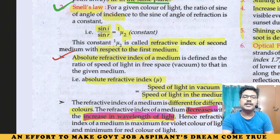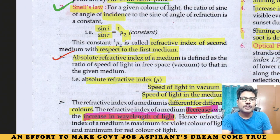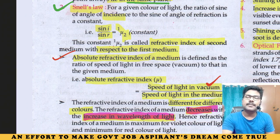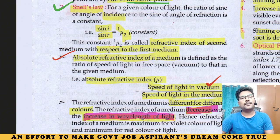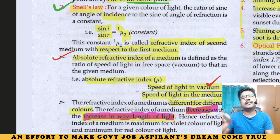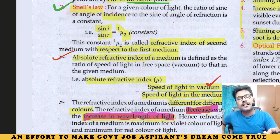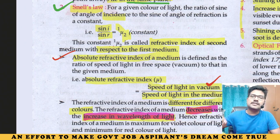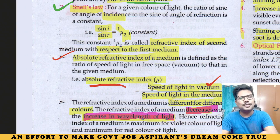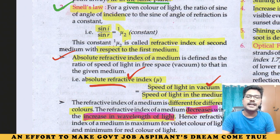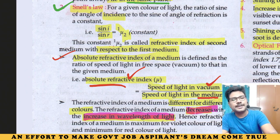What is absolute refractive index? Absolute refractive index is measured as the speed of light in vacuum divided by the speed of light in the medium. If you use the speed of light in vacuum, then it will be the absolute refractive index.